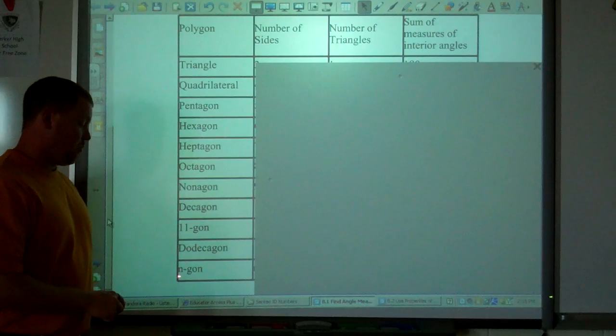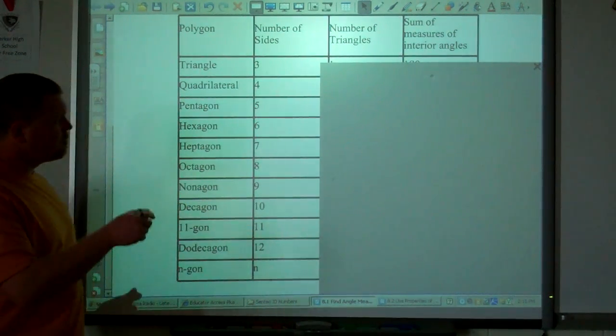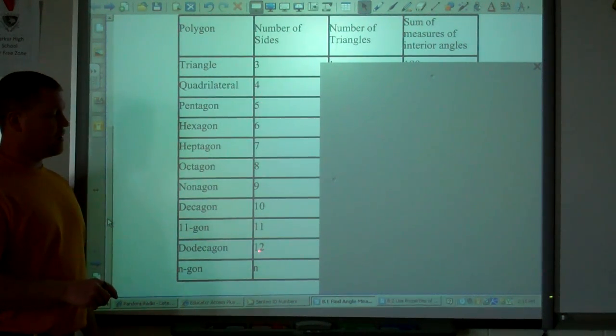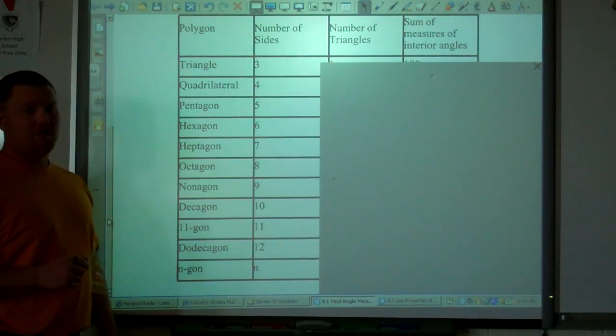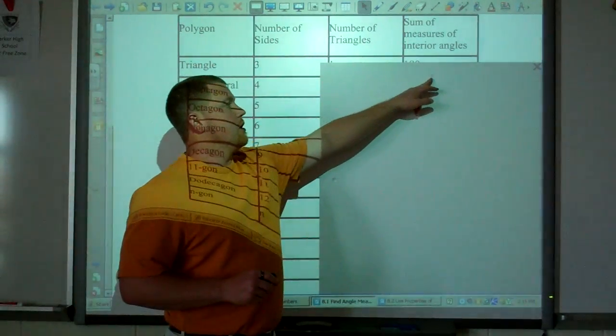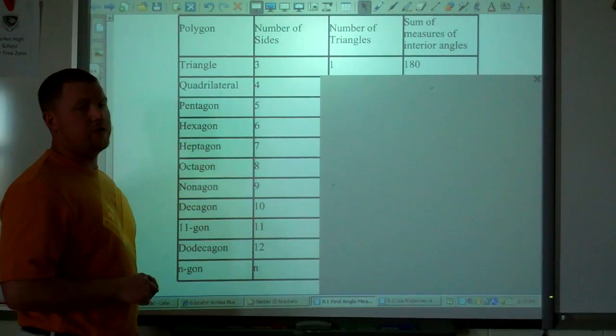So we use n-gon, where n represents the number of sides. Which is this next column, number of sides. Three, four, five, six, so on and so forth, up to n. And obviously, three is the smallest polygon we can have, a closed figure. Now, number of triangles. For a triangle, there's only one triangle inside a triangle. That's 180 degrees.